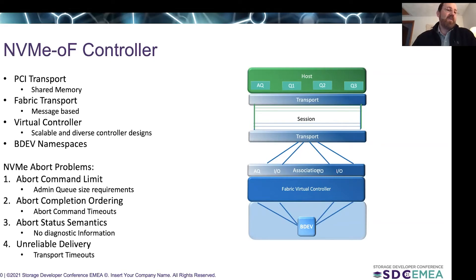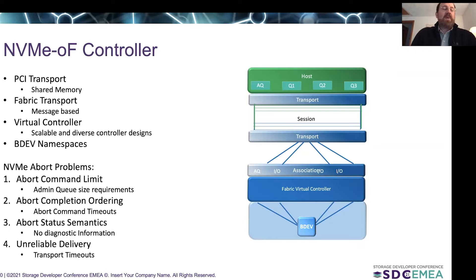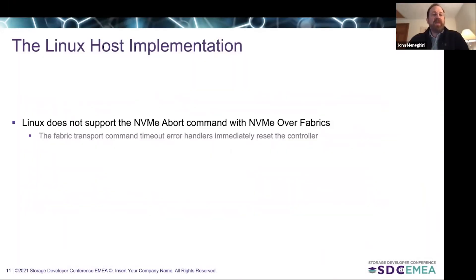Another thing is we have what I call block device namespaces — so you're not necessarily dealing with a simple PCI namespace device. Behind your fabric controller, you could have any type of IO device; you could actually put your NVMe namespace on top of an asynchronous file system. The Linux host implementation does not support the NVMe abort command with NVMe over fabrics. The fabric transport command timeout error handler simply immediately resets the controller, and in large part it's because of the way the abort protocol was defined. What is difficult to use with PCIe is really completely inadequate for fabrics.